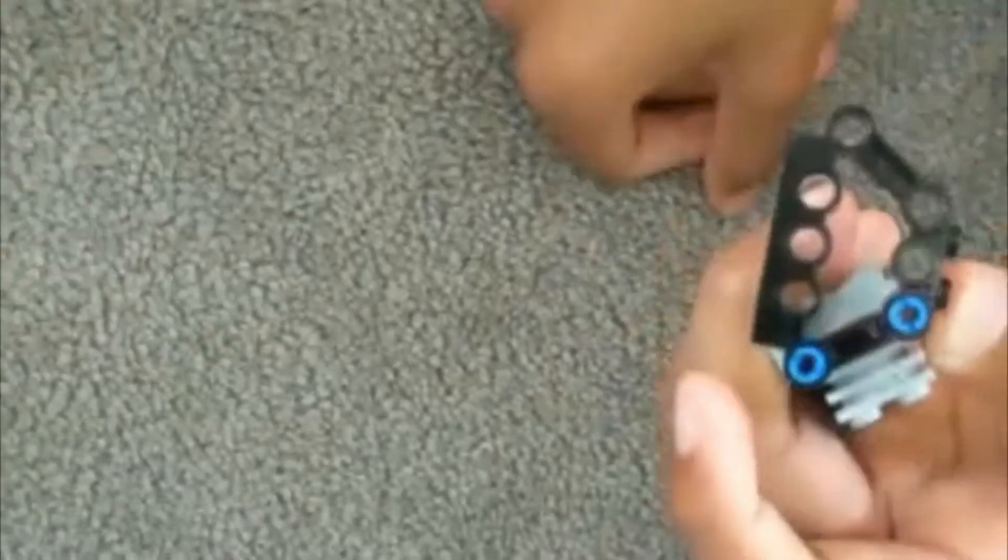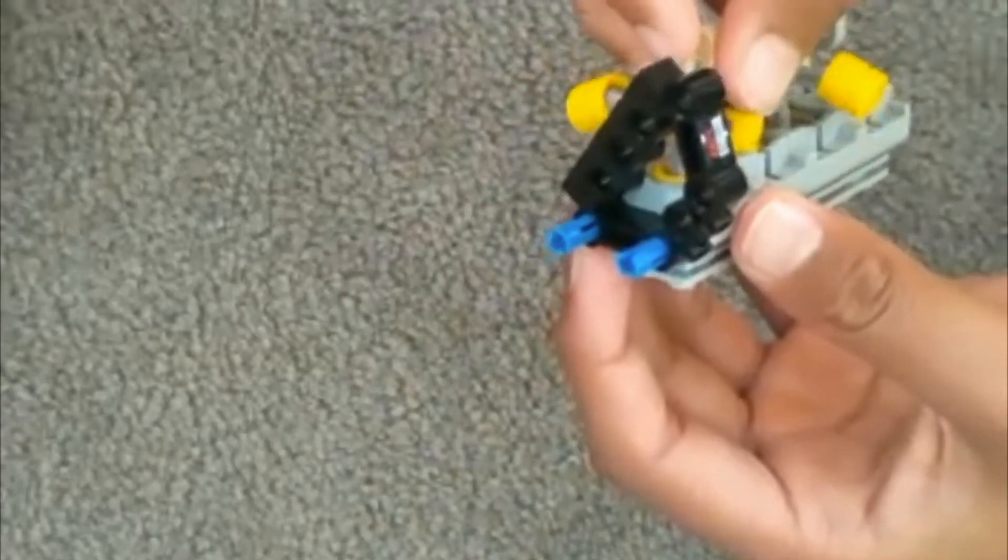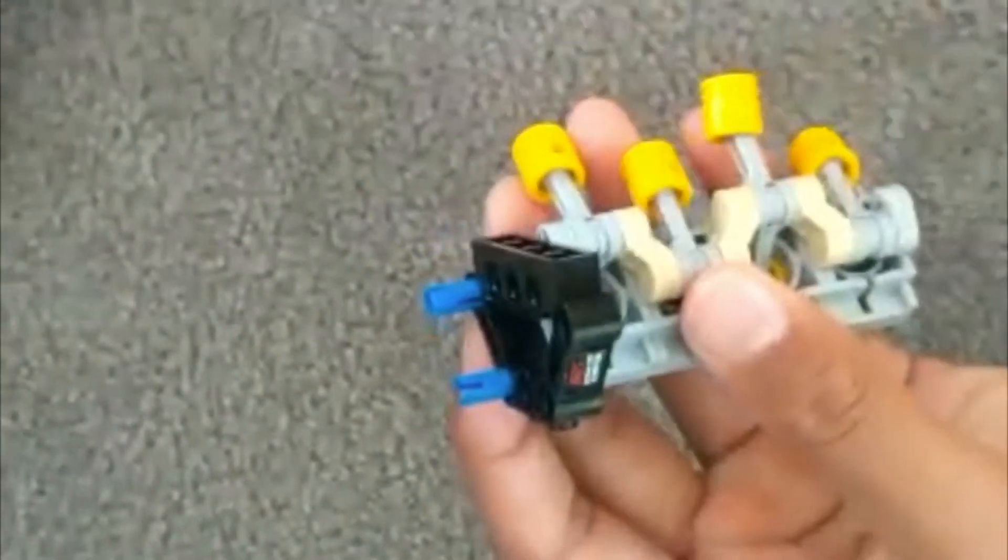Then you get this black piece and put these two in here and here, as so. Then you get your piston arms and you carefully slot them into their holes. As so.